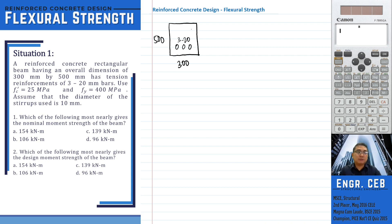Which of the following most nearly gives the nominal strength of the beam? Let us compute for the effective depth. When we say effective depth, that is the distance from the centroid of the steel reinforcements up to the extreme fiber in compression. Our symbol for effective depth is D.